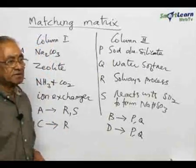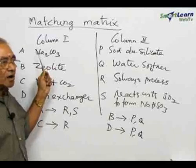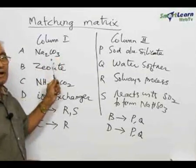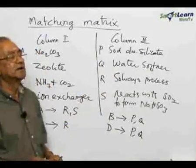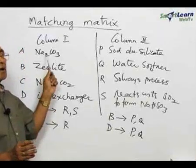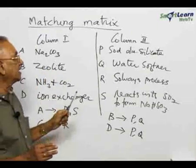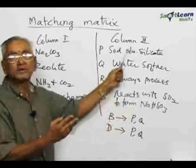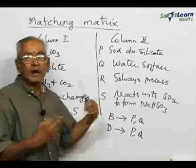The aim of the question is to identify each one of the items in column 1, namely A, B, C, and D, with those present on the right. One important condition is that, for example, item A in column 1 — namely sodium carbonate — can match with one or more of those presented in column 2. Now, let us take up one after the other.